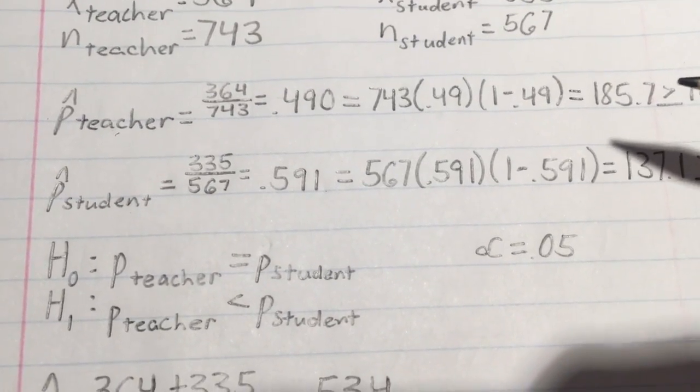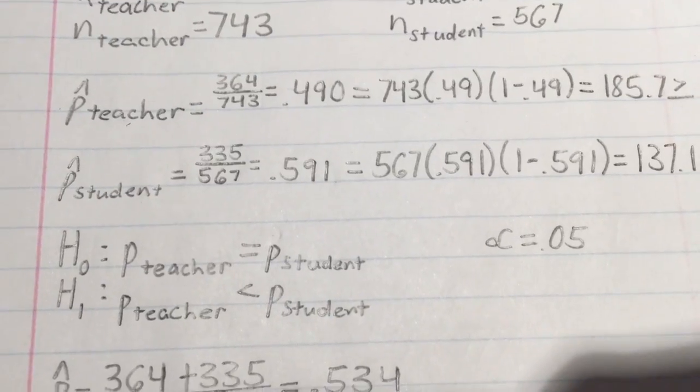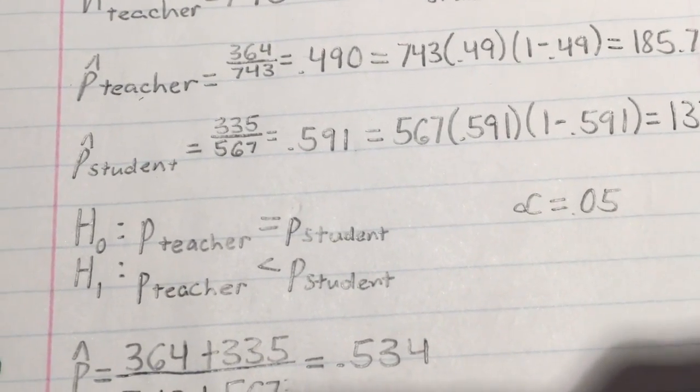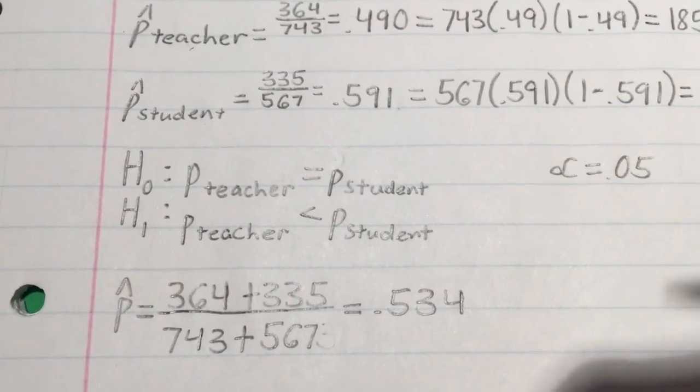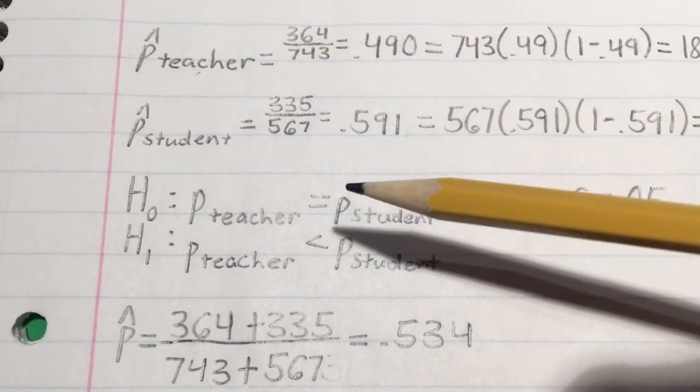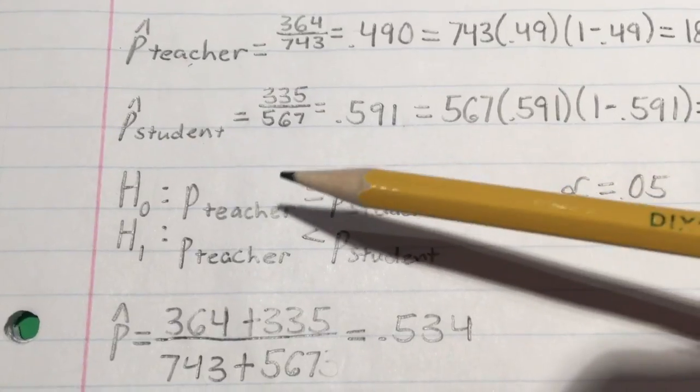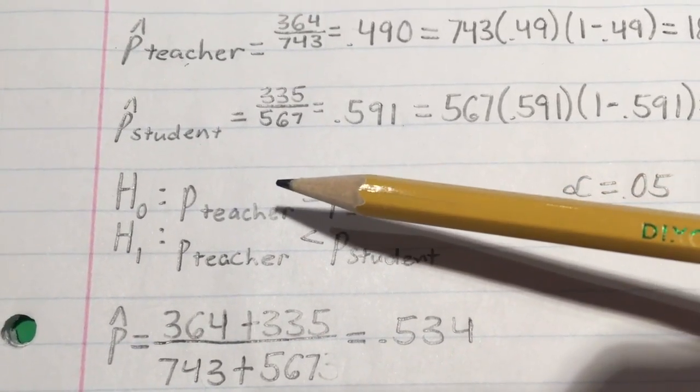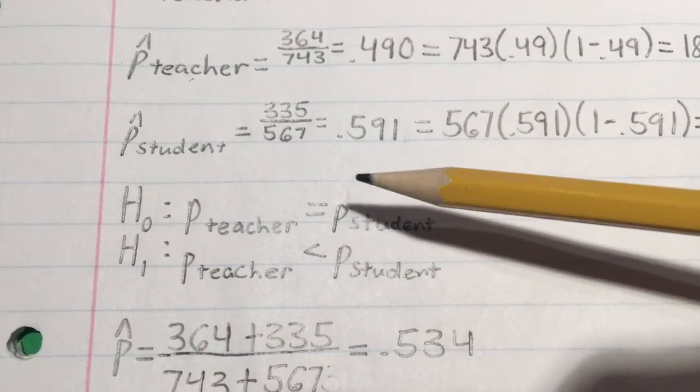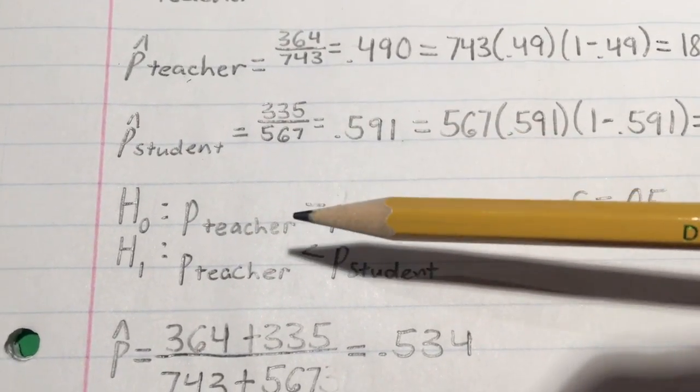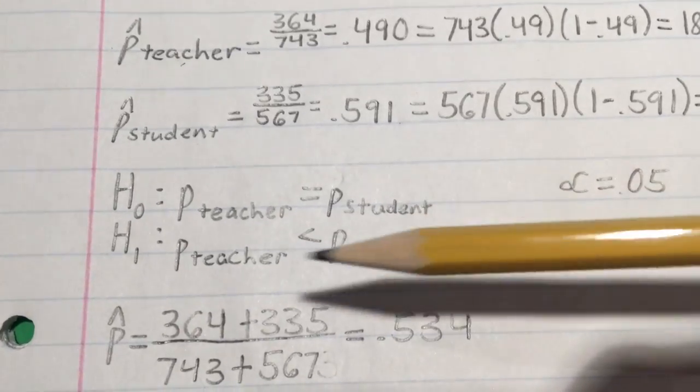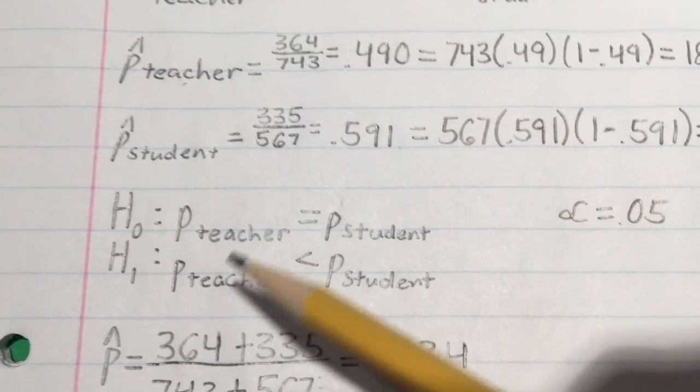And finally, each sample is considered to be less than five percent of the population, so the requirements are met and we can conduct the test. So next we would write our hypotheses. For our null hypothesis, we would write that the proportion of the teacher-centered model is equal to the proportion of the student-centered model.